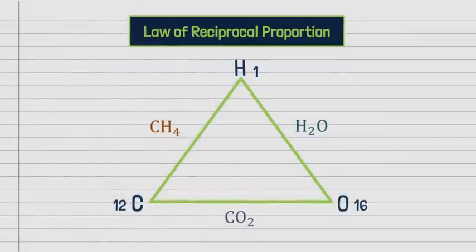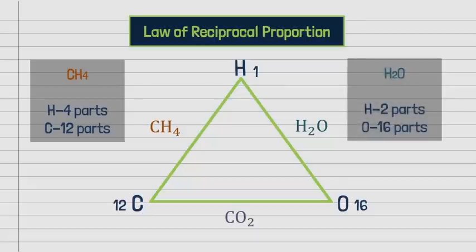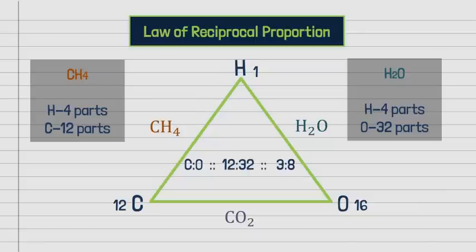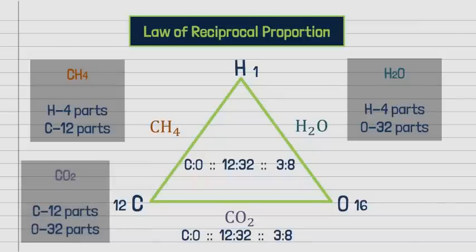Carbon and oxygen combine separately with hydrogen to form CH₄ (methane) and H₂O (water). In methane, 4 parts of hydrogen combine with 12 parts of carbon. In water, 2 parts of hydrogen combine with 16 parts of oxygen, so 4 parts of hydrogen combine with 32 parts of oxygen. The ratio of carbon to oxygen is 12:32, which equals 3:8. In carbon dioxide, 12 parts of carbon combine with 32 parts of oxygen — also a ratio of 3:8. Hence, this illustrates the law of reciprocal proportion.